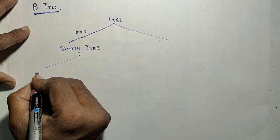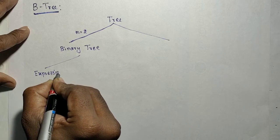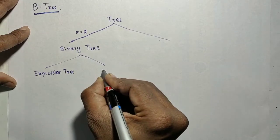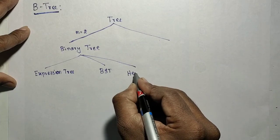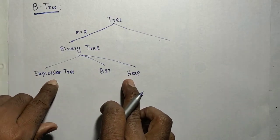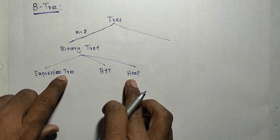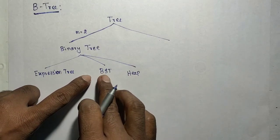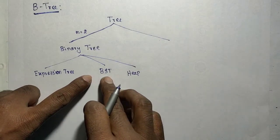We have discussed classifications such as the expression tree, binary search tree (BST), and heap. These classifications are based on the values stored in the tree. In BST, the left subtree holds values less than the root and the right subtree holds values greater than the root.